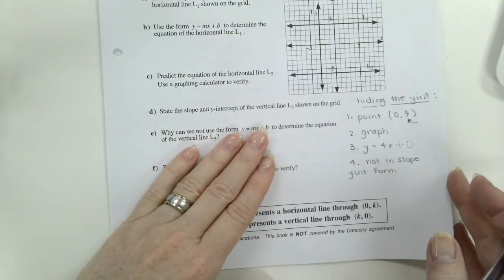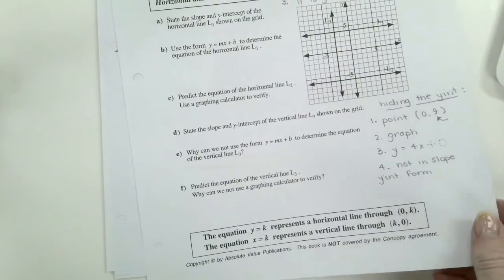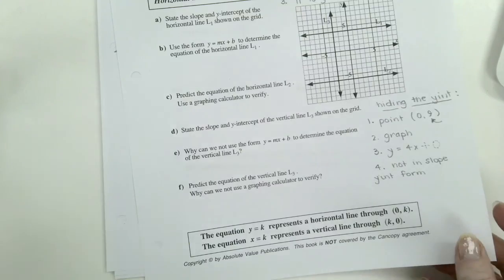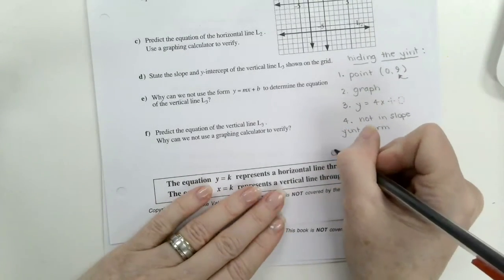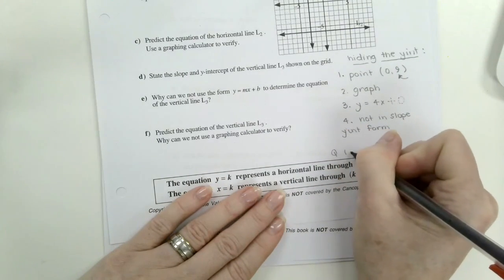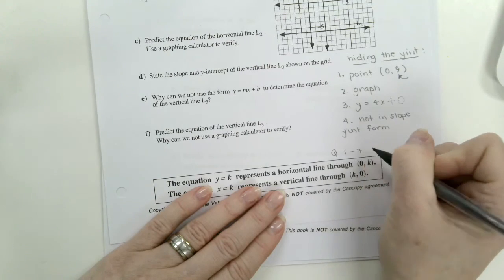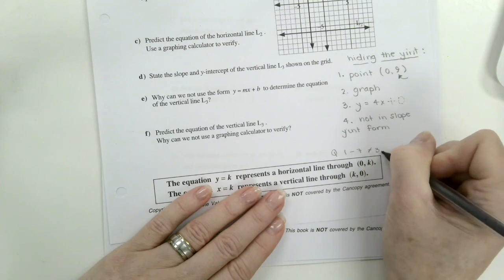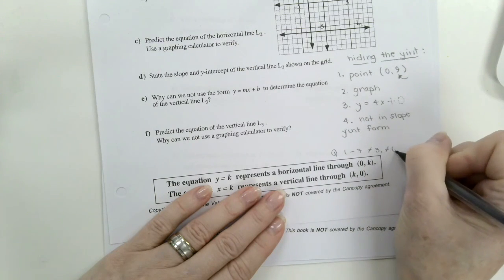That's it. So now we are doing questions. We are going to do 1 to 7. Don't do 3. Don't do 6, C, or D.